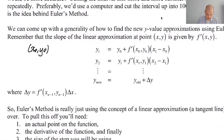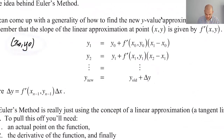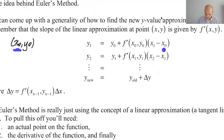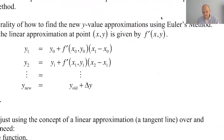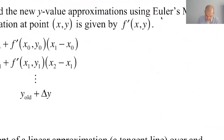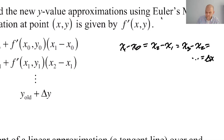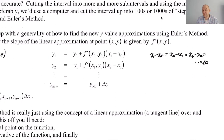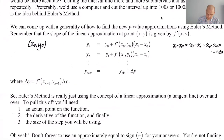If we have a point, we can write the tangent line at that point. The tangent line is going to use f prime of x, y. So y₀, f prime of x₀, y₀, and x₀ we have. The only thing we don't have is x₁. But since we're dividing the whole region evenly, x₁ minus x₀ equals x₂ minus x₁ and so on — they're all just delta x. We know delta x; we decide it ahead of time.